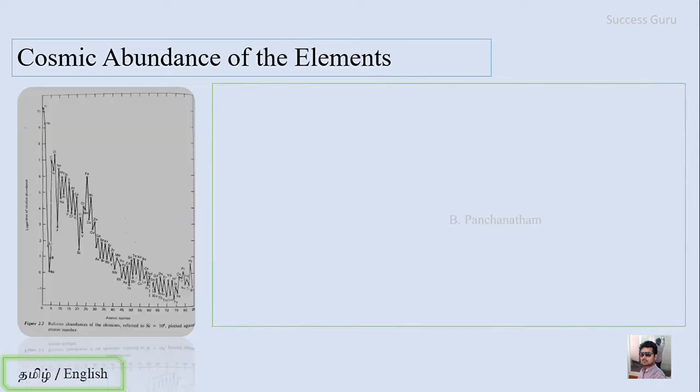You can see the graph here from the earlier table. What they did is they plotted the graph according to this abundance where the left side is the abundance in terms of percentage and the x-axis is the atomic number.